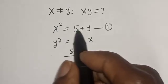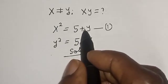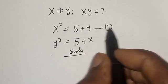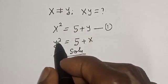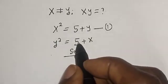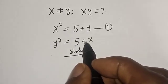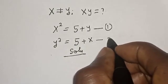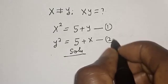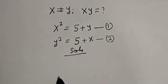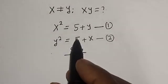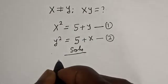x squared is equal to 5 plus y — let's call this equation 1. y squared is equal to 5 plus x — let's call this equation 2. Now let's subtract equation 1 from equation 2.